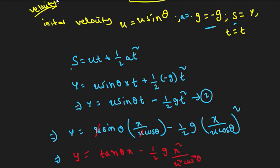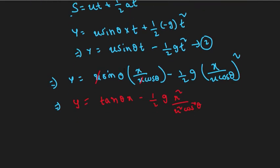Substituting equation 2, which gives u cosθ as constant. We can write a equals tanθ and b equals a constant term.